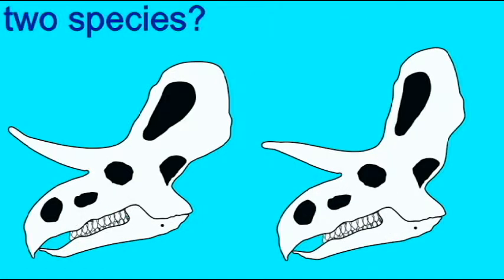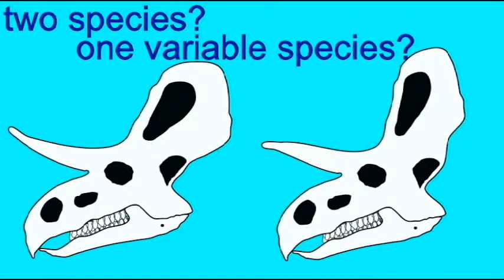For example, sometimes two fossils which are similar but not identical simply represent natural variations in a population. So it is not a new species, but two members of a variable species.